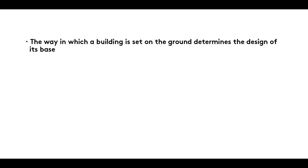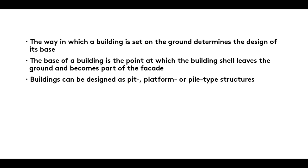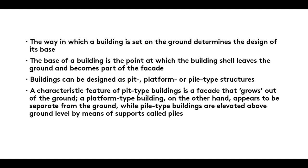Summary: The way in which a building is set on the ground determines the design of its base. The base of a building is the point at which the building shell leaves the ground and becomes part of the facade. Buildings can be designed as pit, platform, or pile-type structures. A characteristic feature of pit-type buildings is a facade that grows out of the ground. A platform-type building, on the other hand, appears to be separate from the ground, while pile-type buildings are elevated above ground level by means of supports called piles.